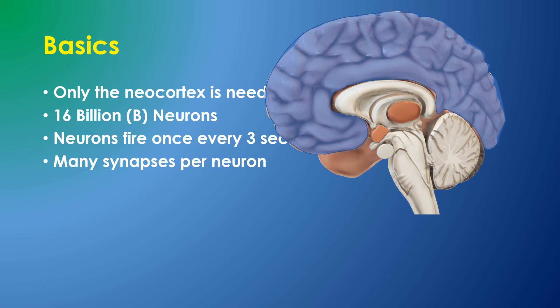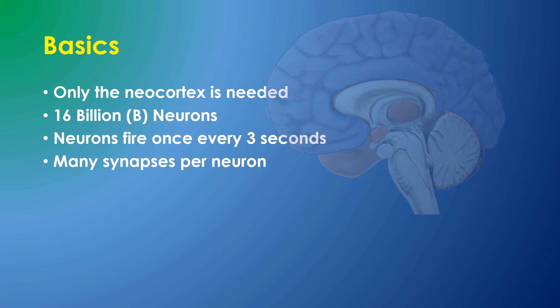The neocortex contains about 16 billion neurons. Neurons fire, on average, once every three seconds.